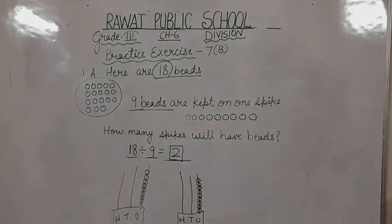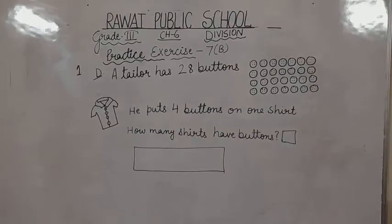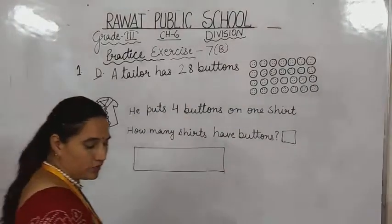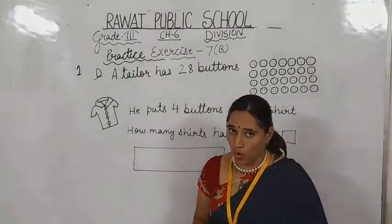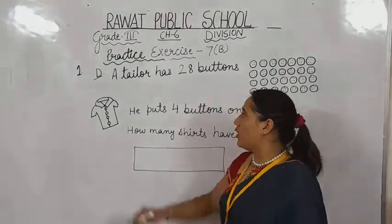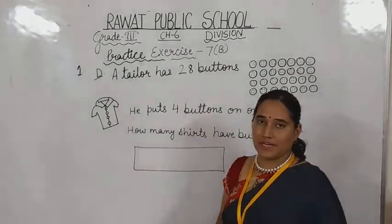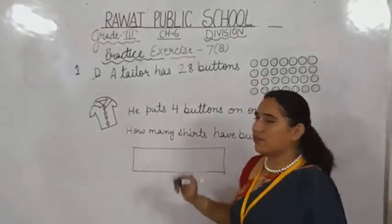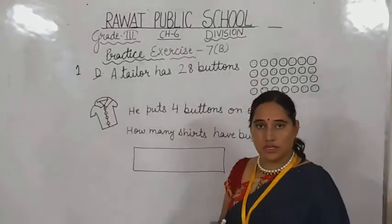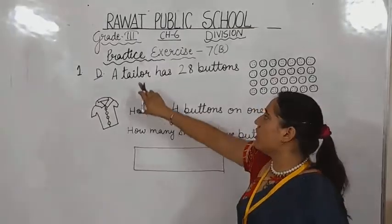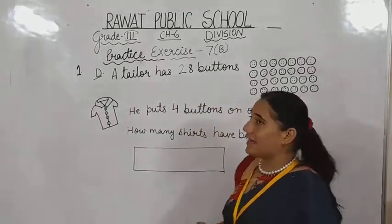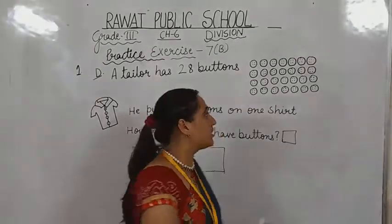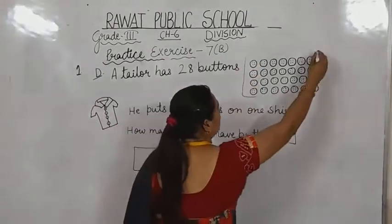We skip question b — already done in your book — and question c you all have to do on your own. Now we are talking about question number d, which is not done in your book but we are going to learn it on the board. A tailor has 28 buttons in total.